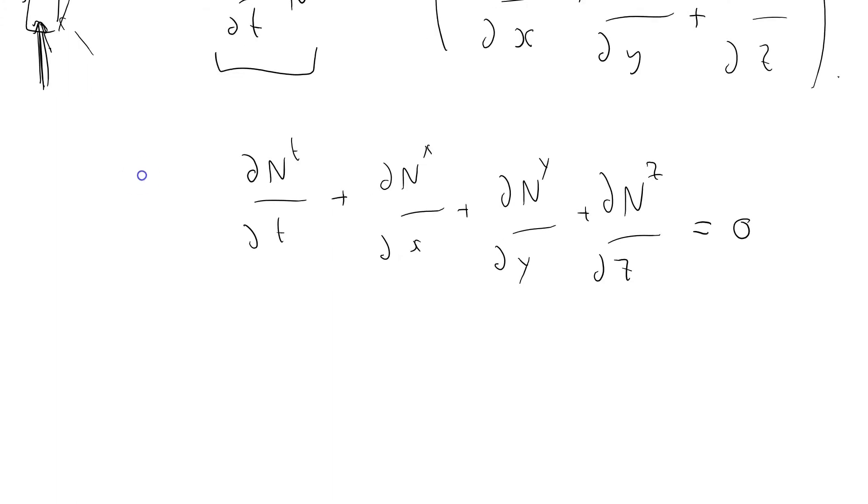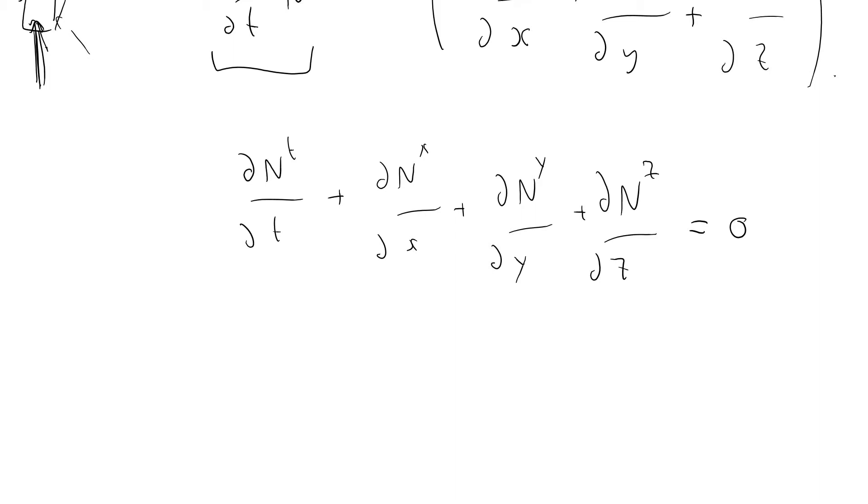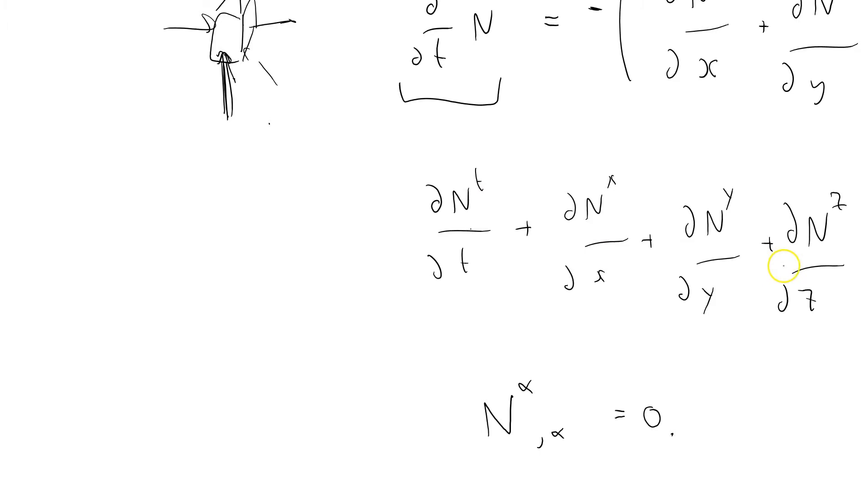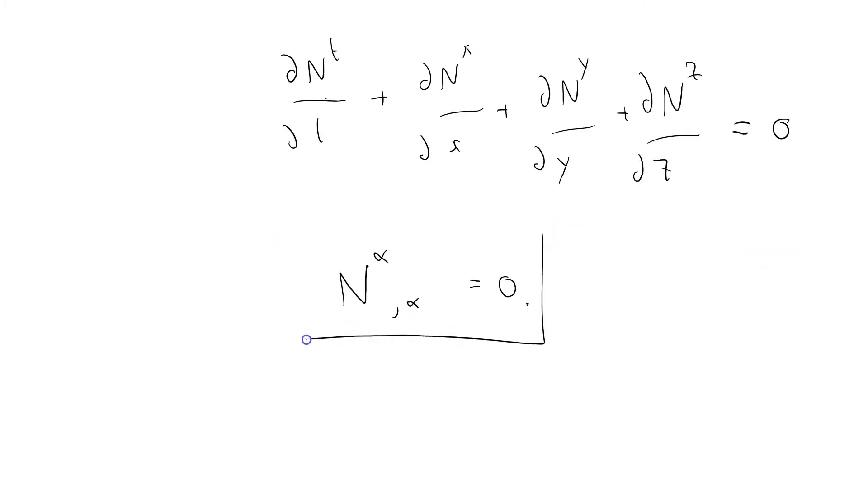Let me show you why this is interesting, or why I like it. It's because I can write it out like that. Remember Einstein's summation convention gives me an implicit summation over repeated indices, and I've got an index there and an index there, so we're summing over alpha, which is the sum over 0, 1, 2, 3 coordinates. And that statement there represents conservation of particles in a conservation equation format.